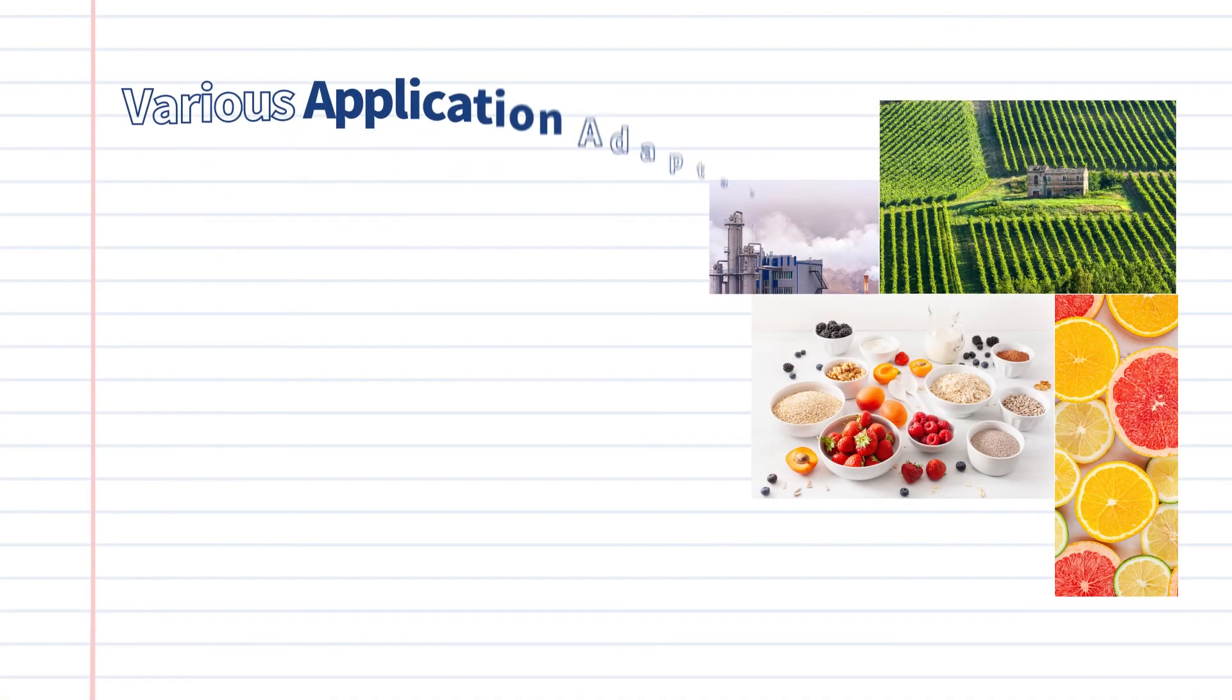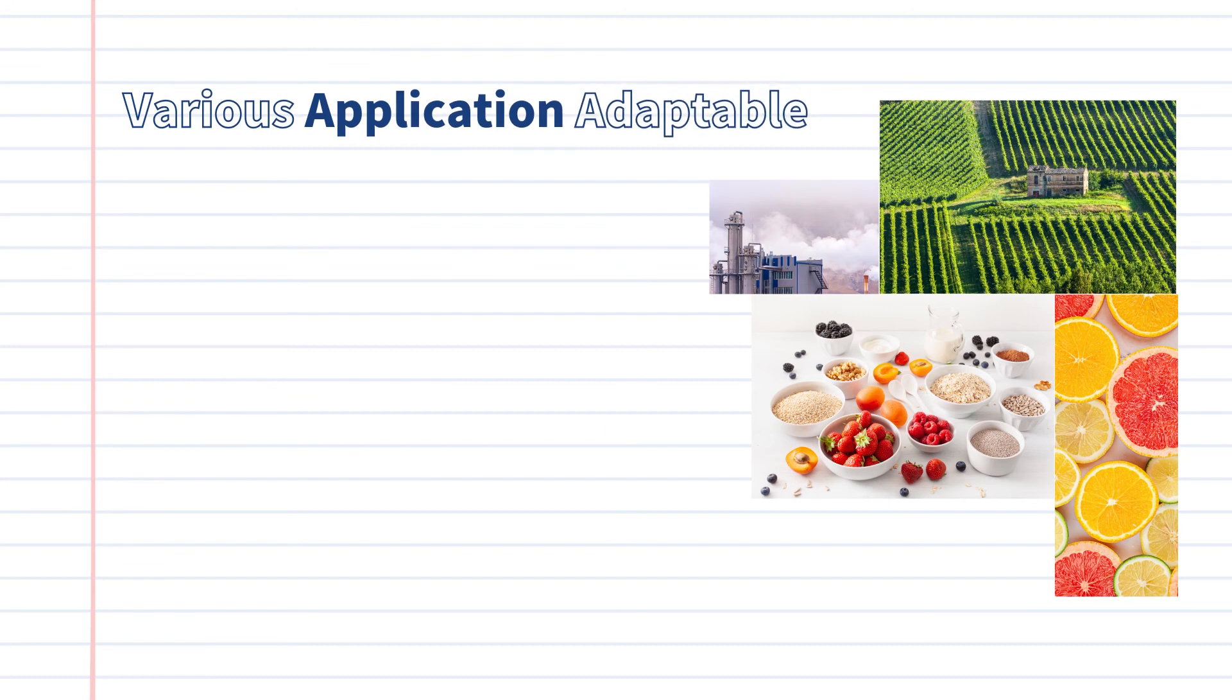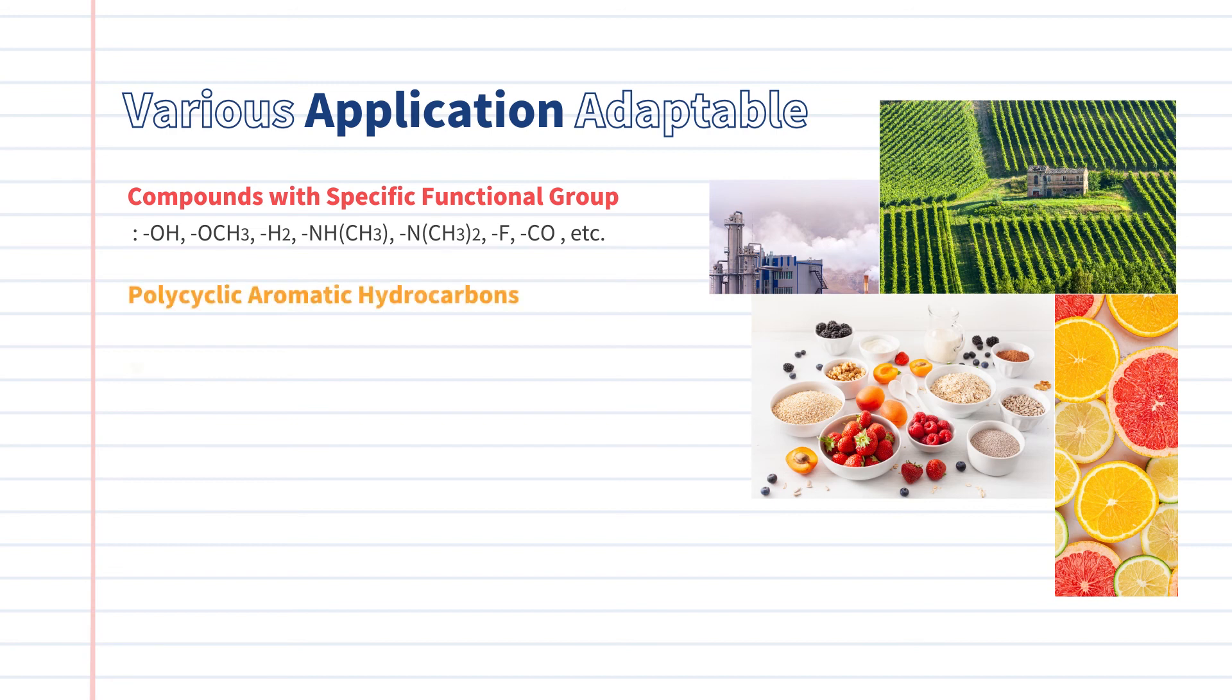For these reasons, the fluorescence detector is widely required in the food, environmental, and pharmaceutical fields for the analysis of compounds having specific functional groups, especially with samples containing high levels of impurities. Polycyclic aromatic hydrocarbons and vitamins B1, B2, etc. are good examples.